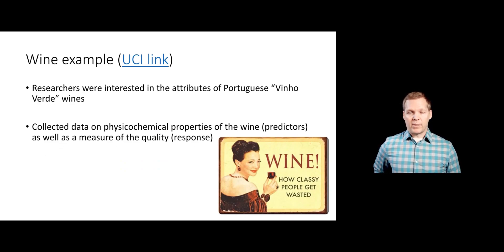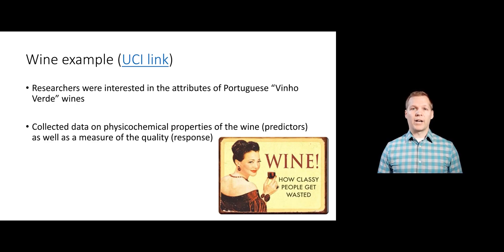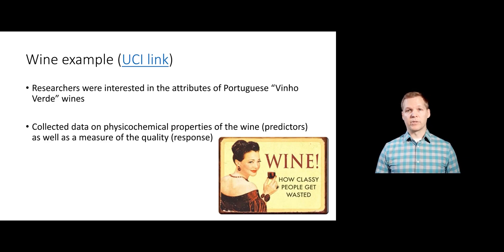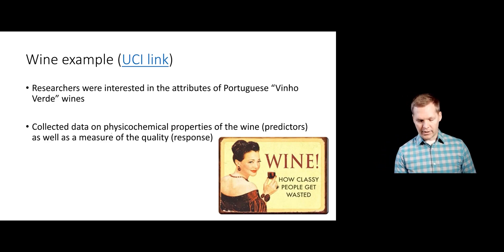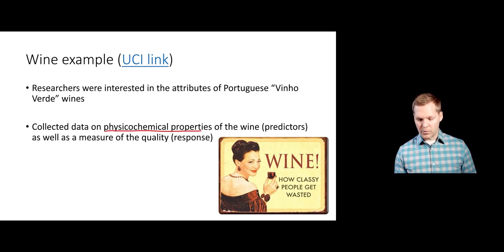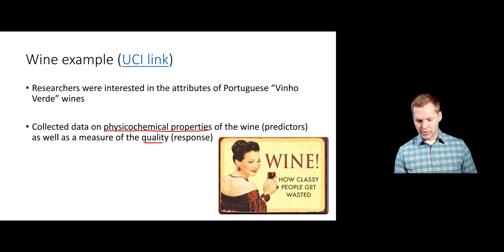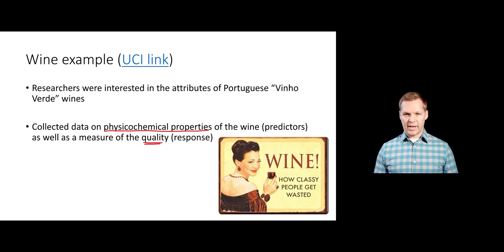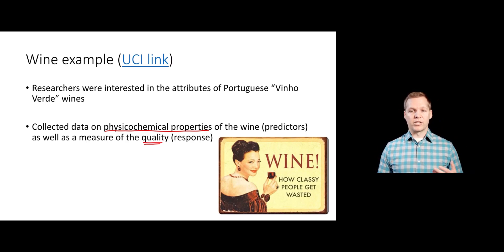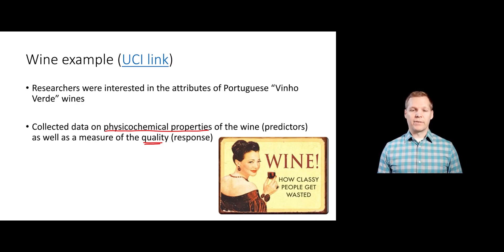Let's do an example to get an idea of it. We're going to use this wine dataset that we played with before. This dataset has information about wines from Portugal, with a bunch of explanatory or predictor variables created by looking at the physiochemical properties of the wines. The response variable we want to talk about is the quality variable, which is measured by experts — just a measure of how good the wine actually is.